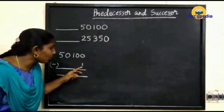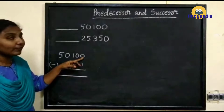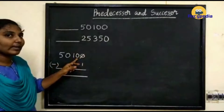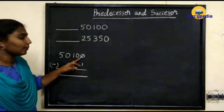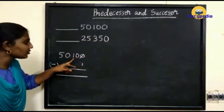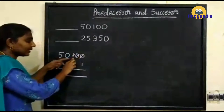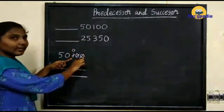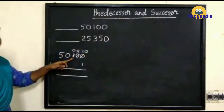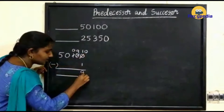Here we have 1 and here we have 0. We can't subtract 1 from 0, so we have to take a borrow. The next digit is also 0, so we can't take a borrow from that number either. The next number is 1, so we have to take a borrow from that number. Cut these two numbers — here we write 0, here we write 10, and here we have 9. Now subtract 1 from 10: 10 minus 1 is 9, so write 9.